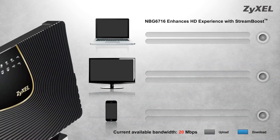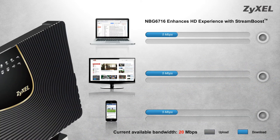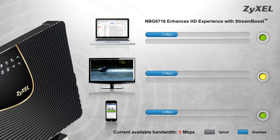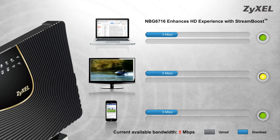StreamBoost enables automatic bandwidth management, keeping all your networked devices running smoothly. For example, when a smart TV begins streaming 1080p content, the router will automatically dedicate more bandwidth to it.